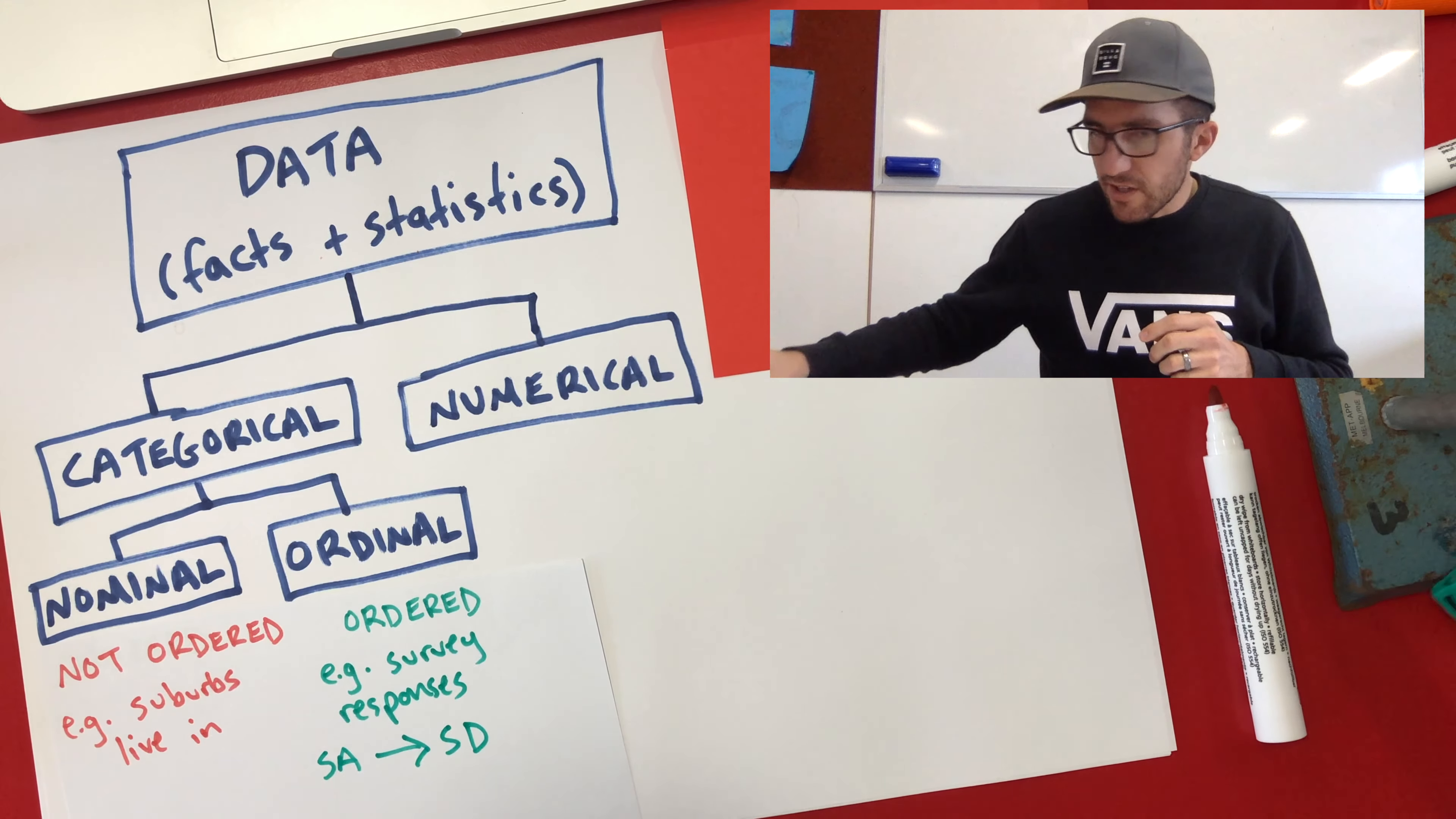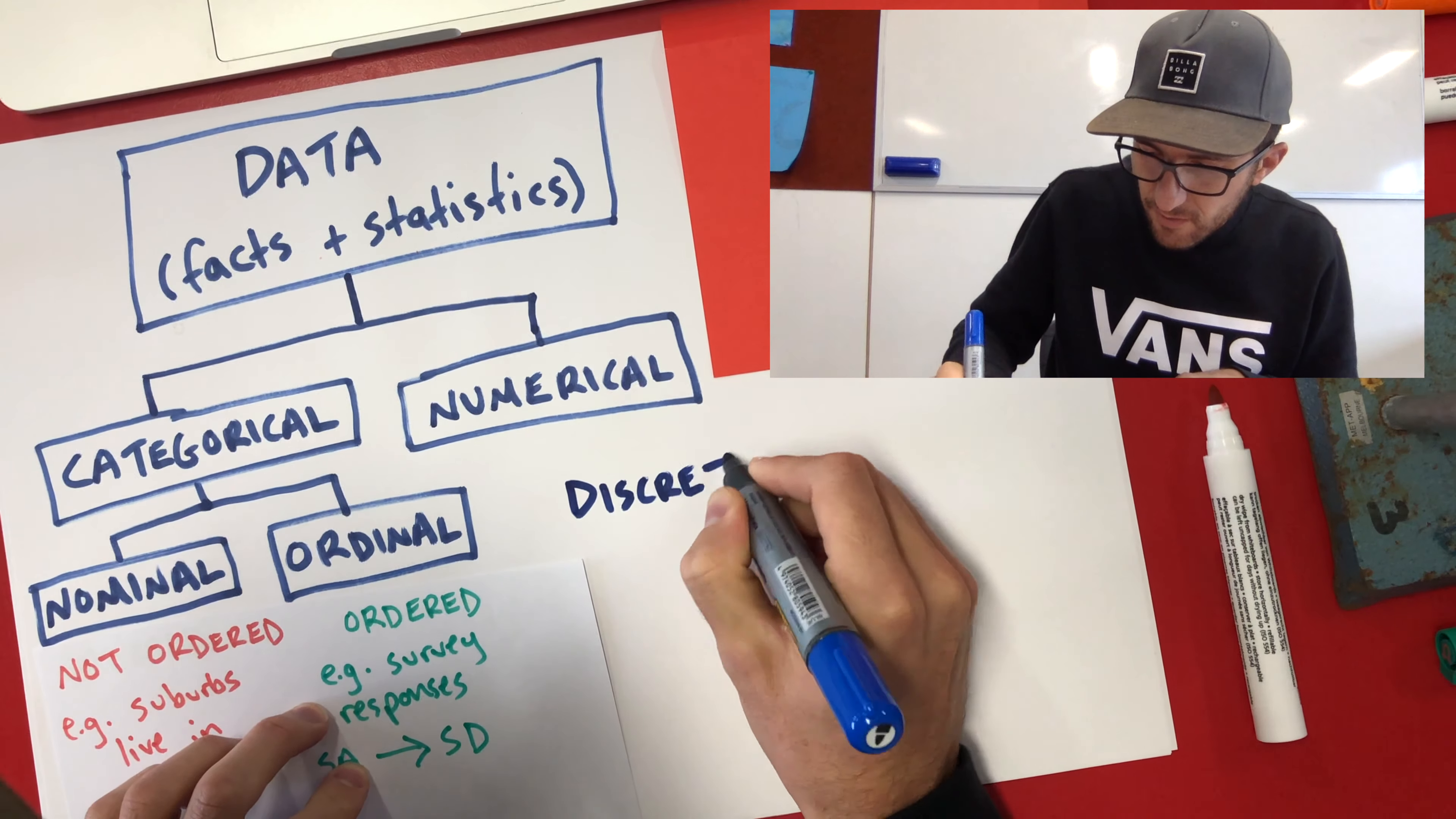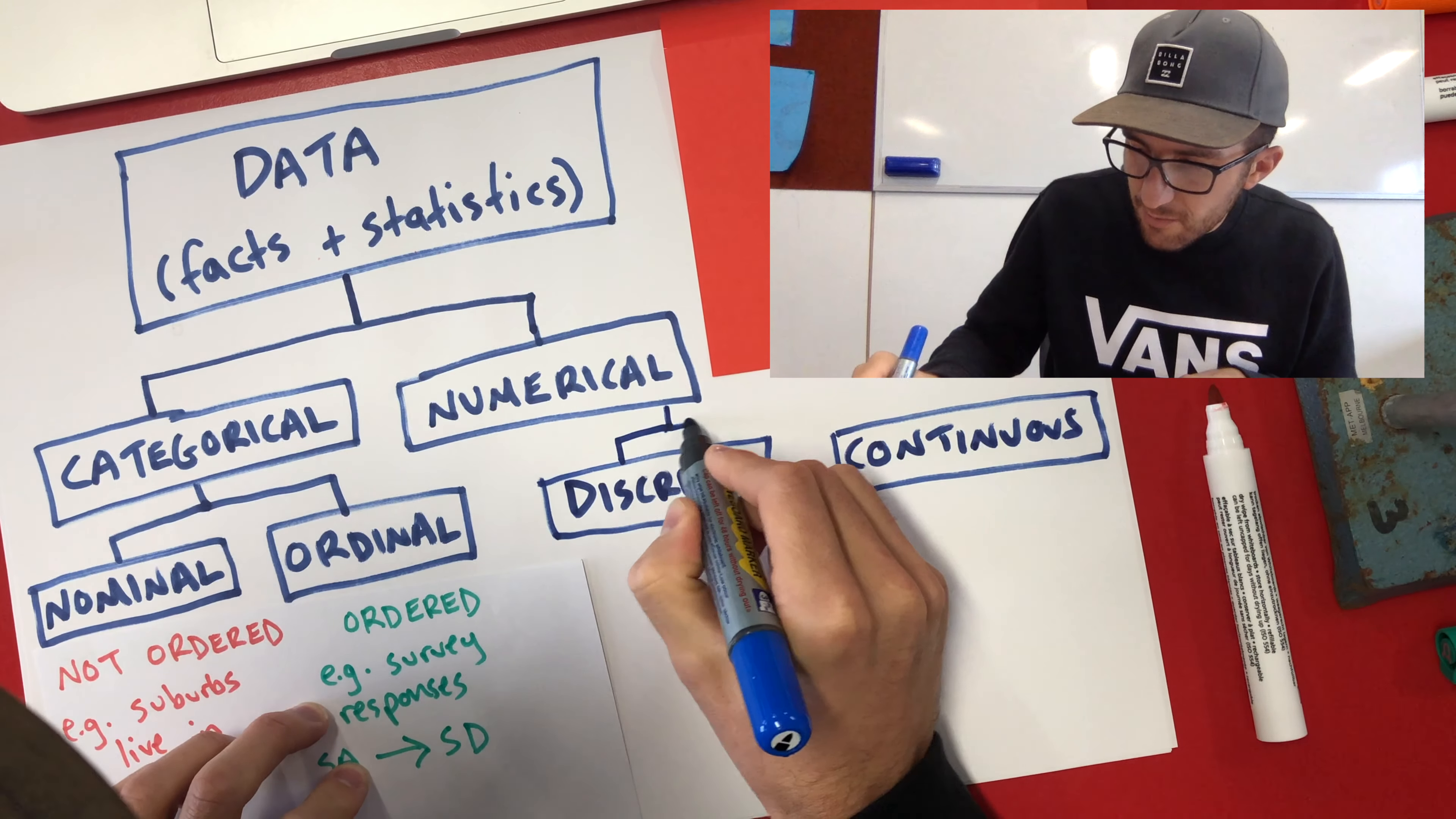Over on the other side here, we've got our numerical data still. And this also has two categories. So first of all, there's discrete data. And the other one is called continuous. So there are two categories of data which are numerical. So again, numerical means that we are dealing with numbers.